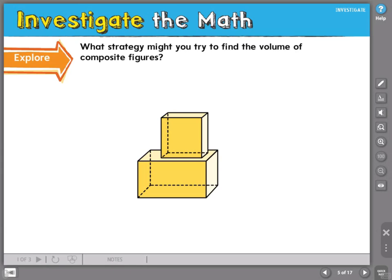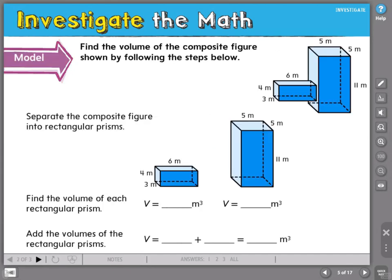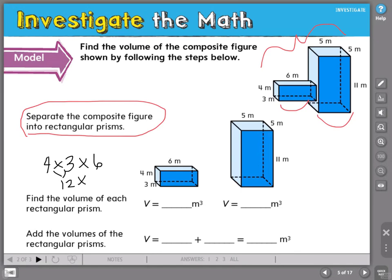But how would we go about finding the volume of this figure? Let's look and see what we can do. To find the volume of a composite figure, we need to separate the composite figure into rectangular prisms. We need to take this larger shape and separate it into two parts that we can find the volume of. So let's find the volume here. I've got 4 times 3 times 6. 12 times 6 equals 72. The volume of this small shape is 72 cubic meters.